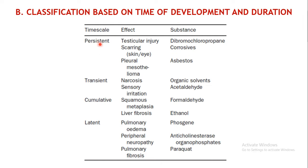The first subclass is persistent — something lasting for quite a long time. Effects such as testicular injury, scarring of the skin or eyes, or pleural mesothelioma may occur; examples of causative substances include corrosives and asbestos. The next type is transient — not permanent. It develops over a short period and is short-lasting. Effects such as narcosis may be produced by organic solvents, or sensory irritations by acetaldehyde.